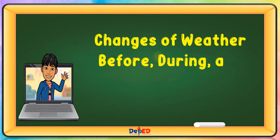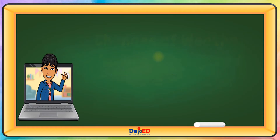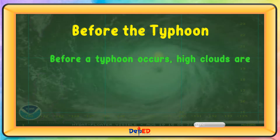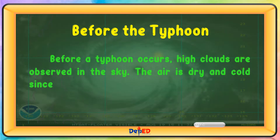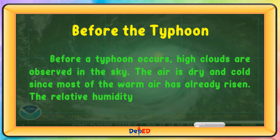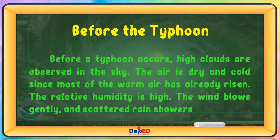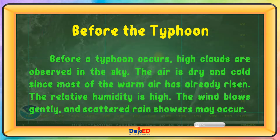Changes of weather before, during, and after a typhoon. Before a typhoon occurs, high clouds are observed in the sky. The air is dry and cold, since most of the warm air has already risen. The relative humidity is high. The wind blows gently, and scattered rain showers may occur.